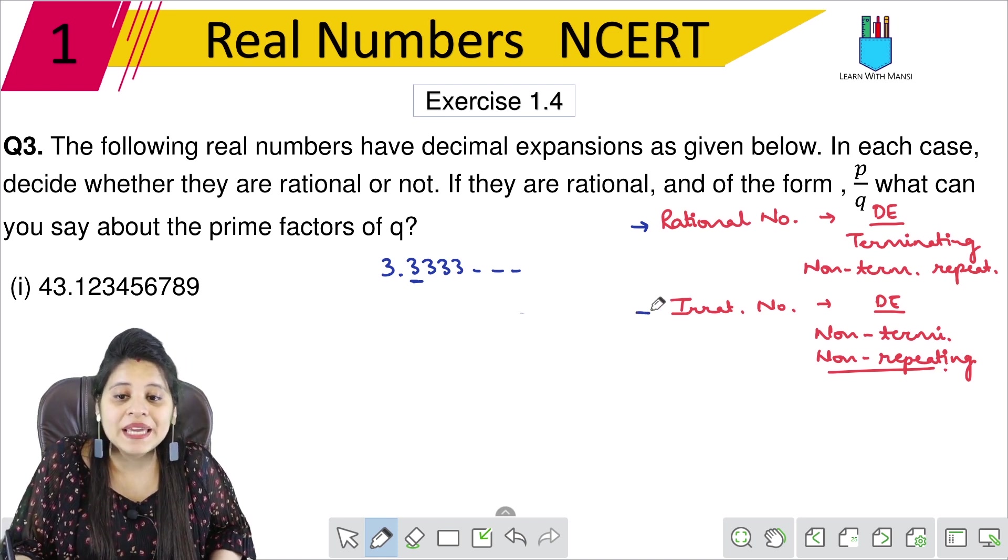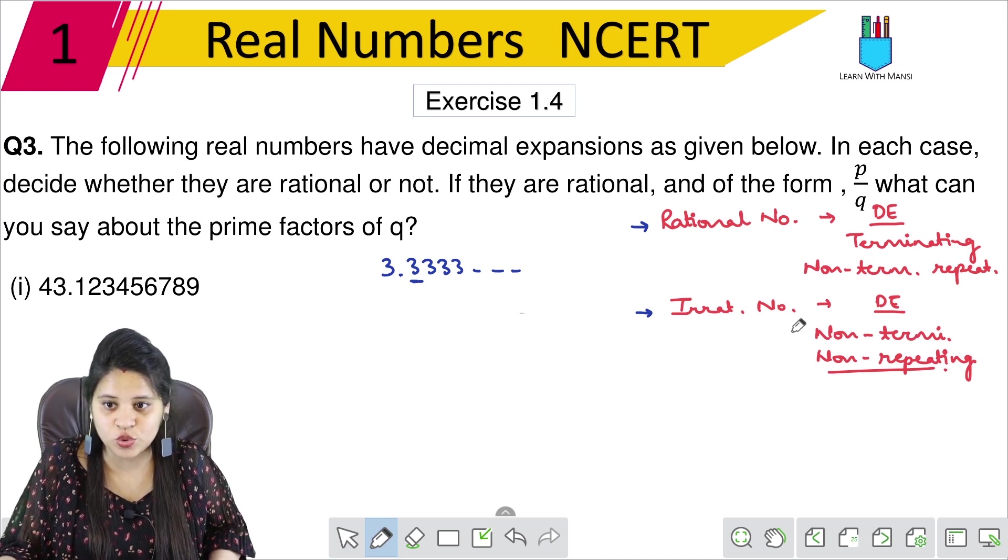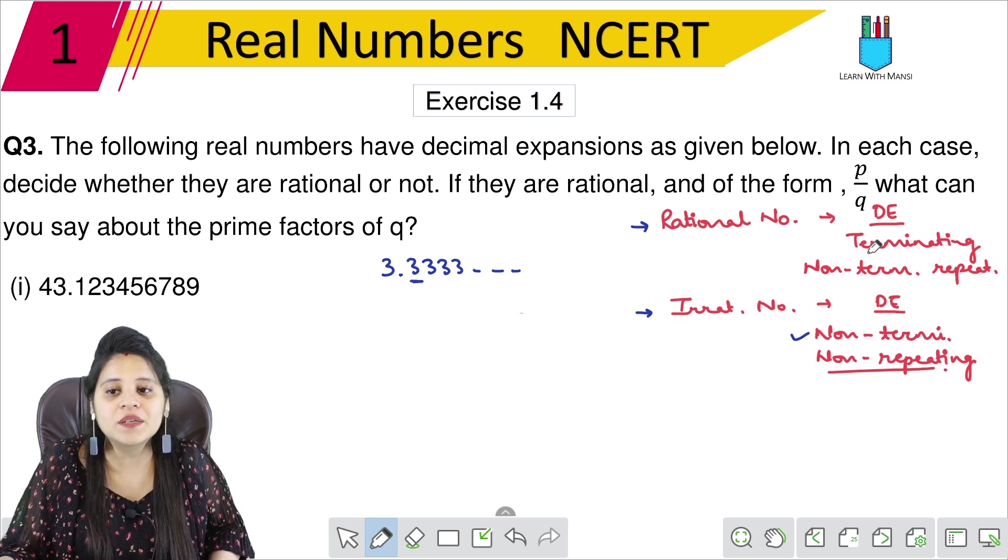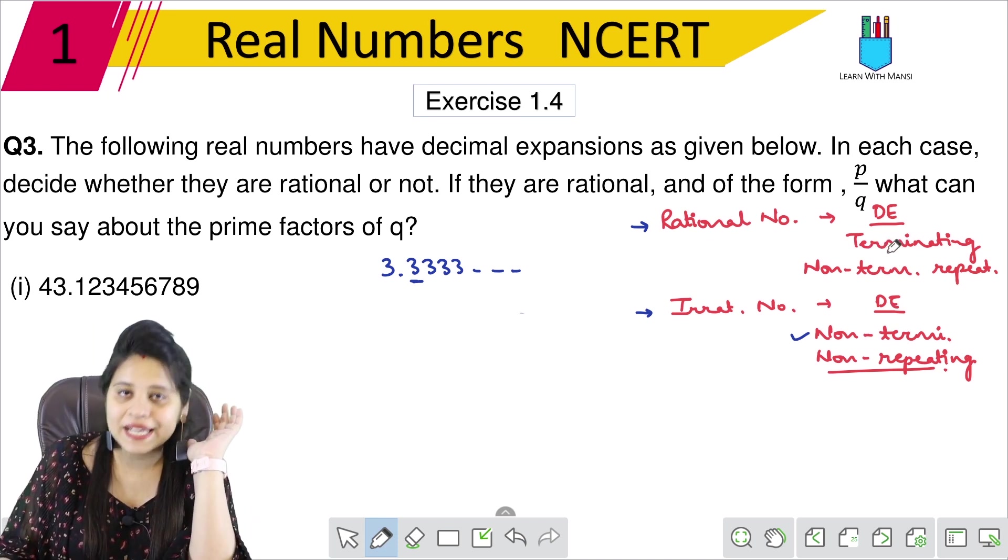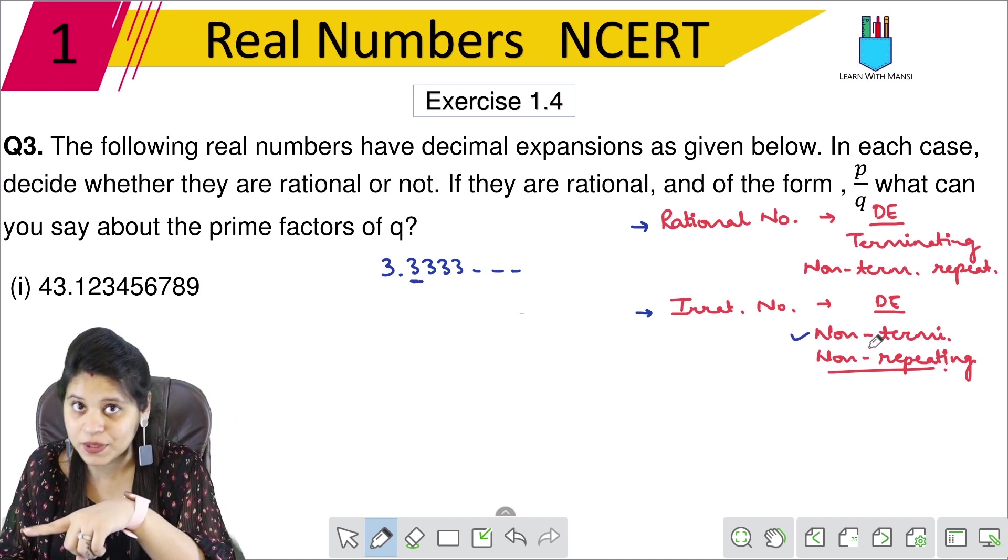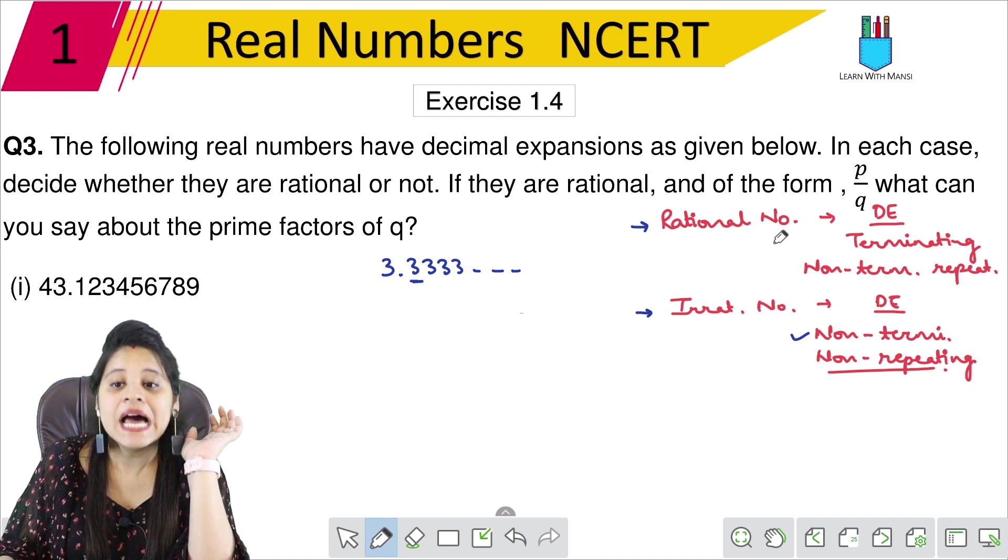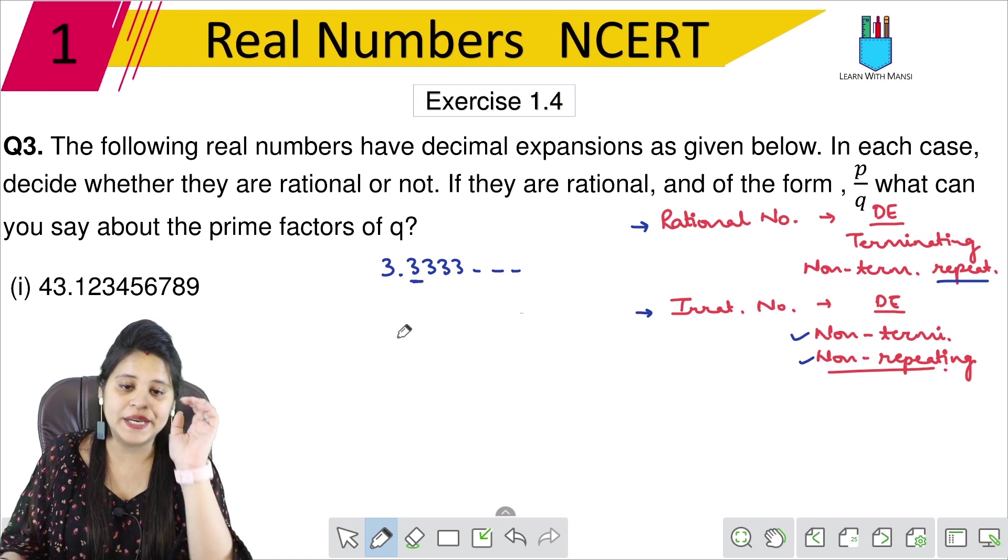When we are talking about irrational numbers, the decimal expansion is always non-terminating. If it is terminating, it is always rational. But if it is non-terminating, it can be rational or irrational. If it is rational, it is repeating. If irrational, it is non-repeating.